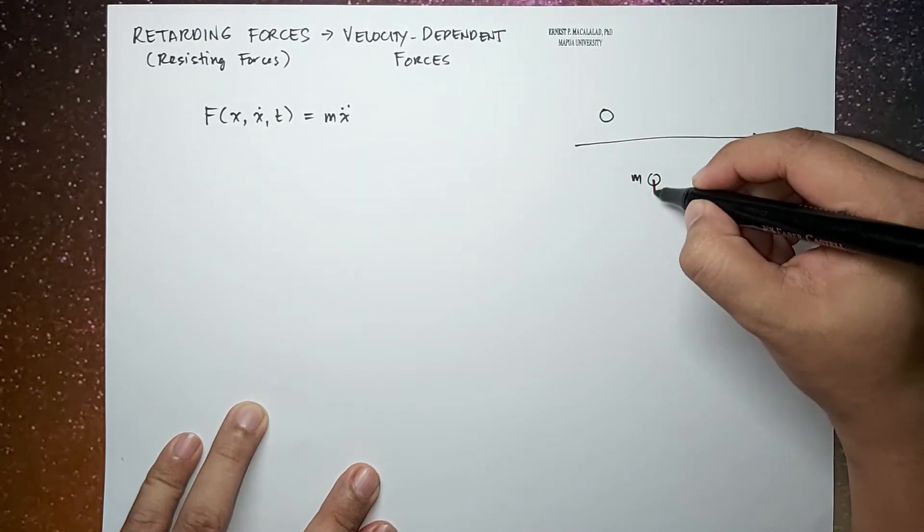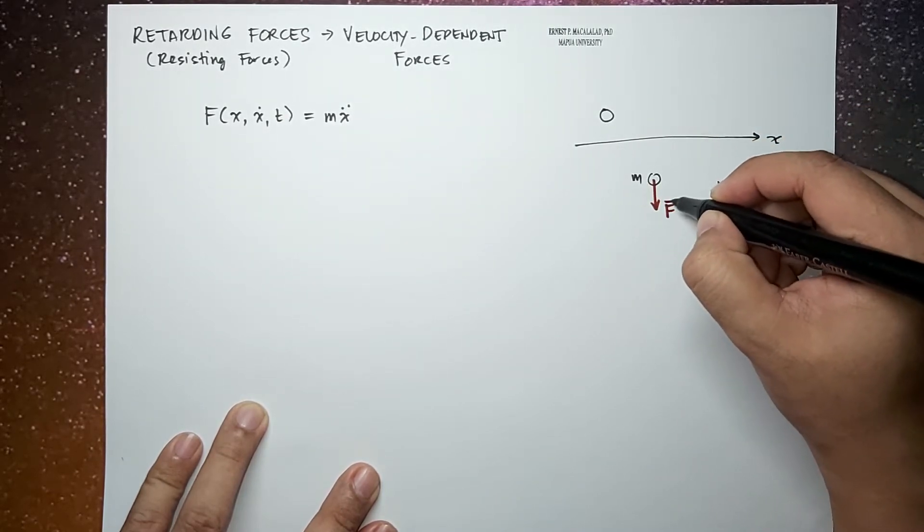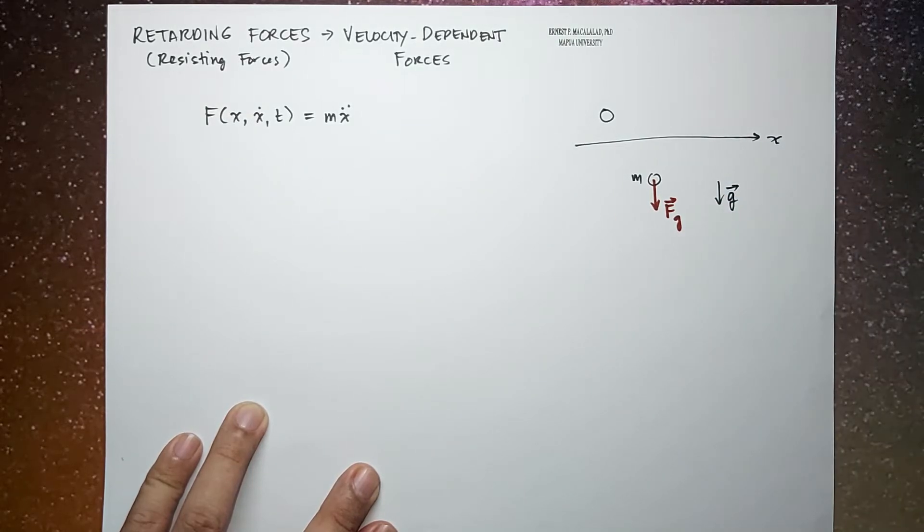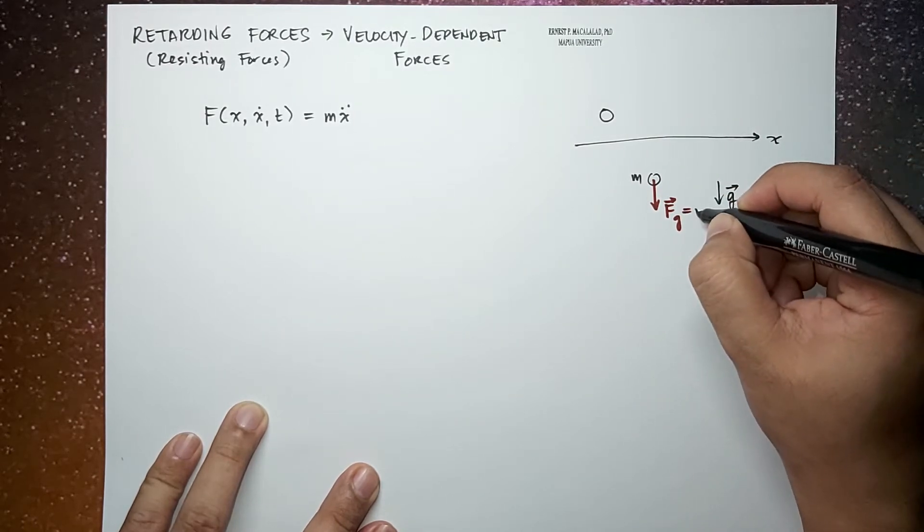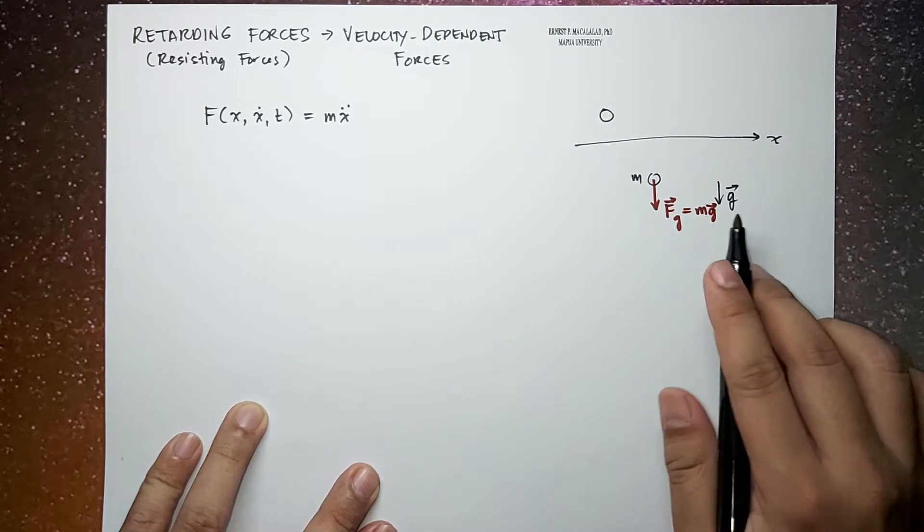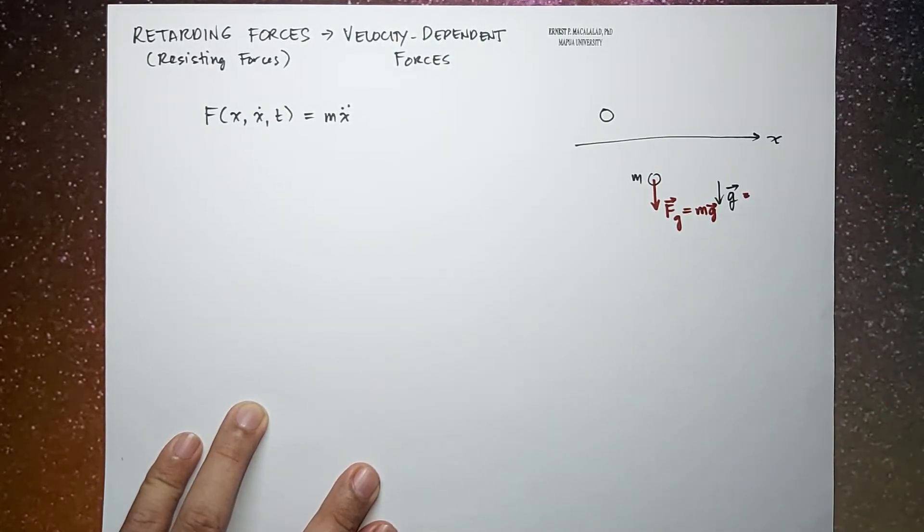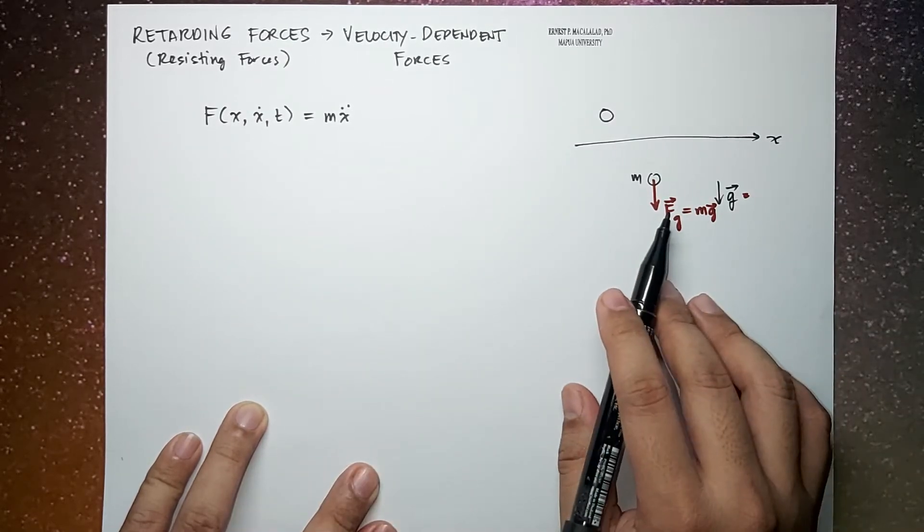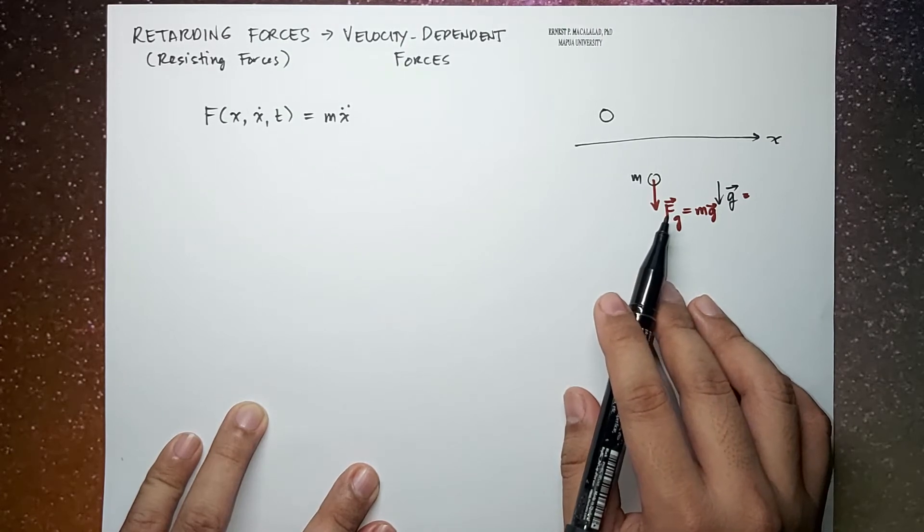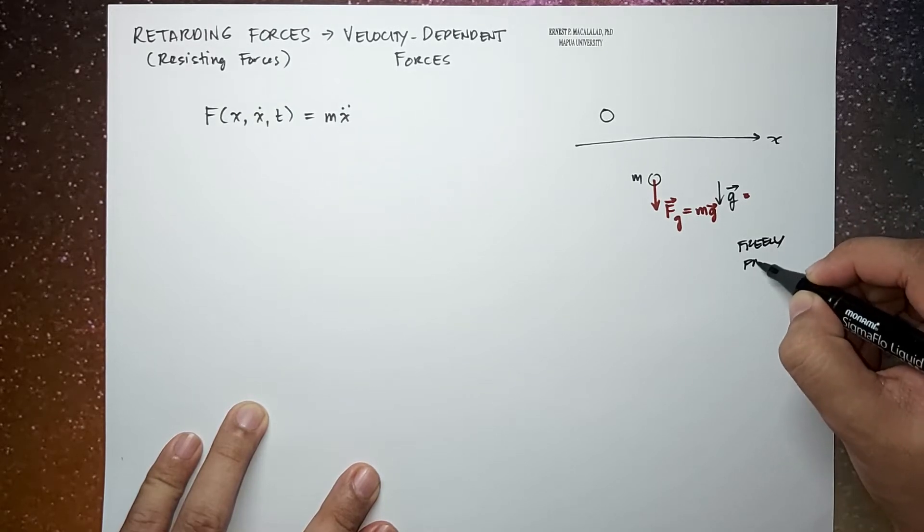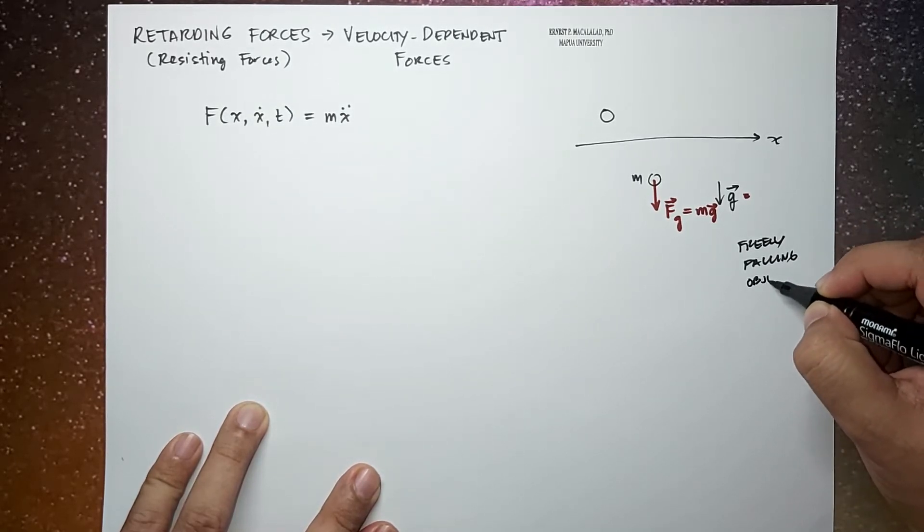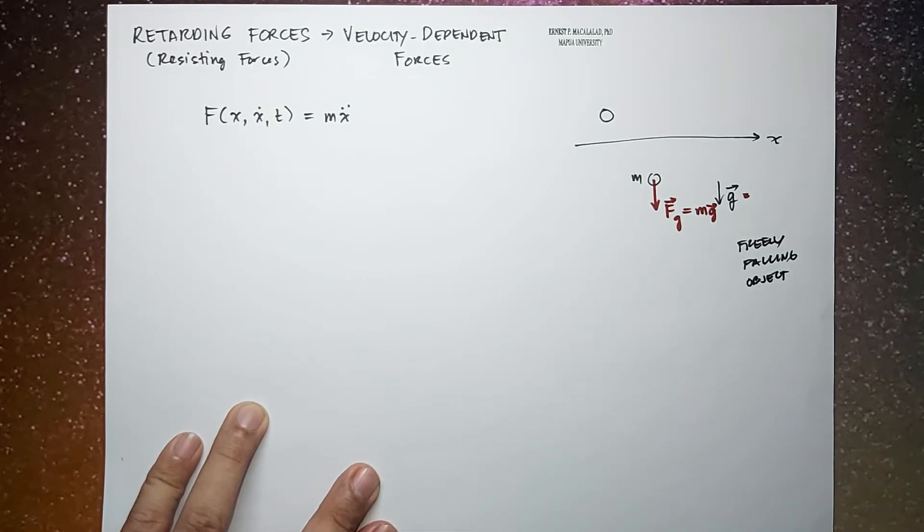So the constant gravitational force is given by Fg, and by definition this is equal to the mass times the gravitational field or the acceleration due to gravity. Now for simple cases, this force alone is sufficient to describe the equation of motion of freely falling objects. And this is what you have when you discuss free fall motion during your general physics class.